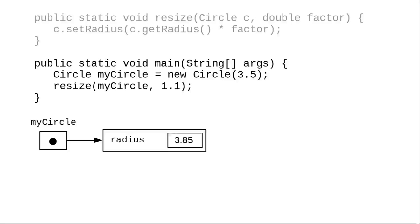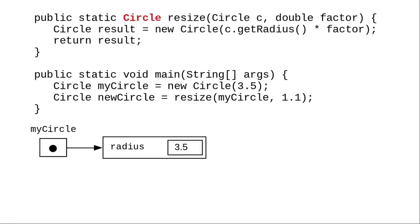That would mean returning a new object in our case. Here's the rewrite of our resize code to be a method that returns a circle object.